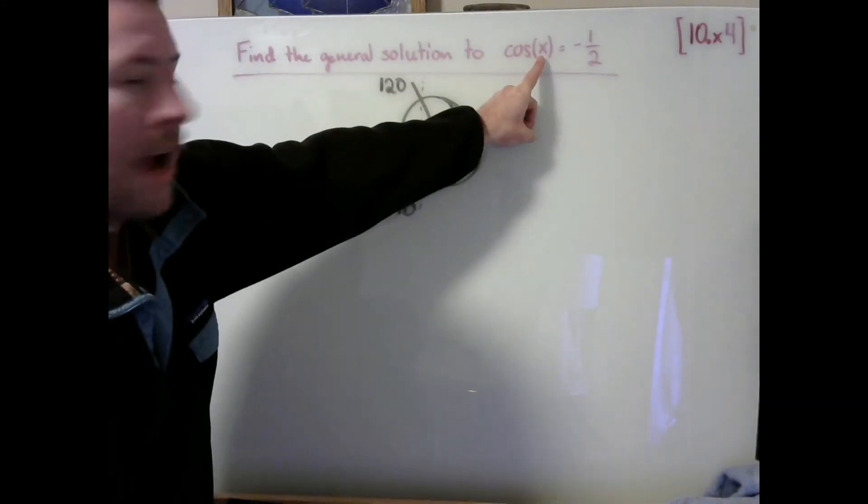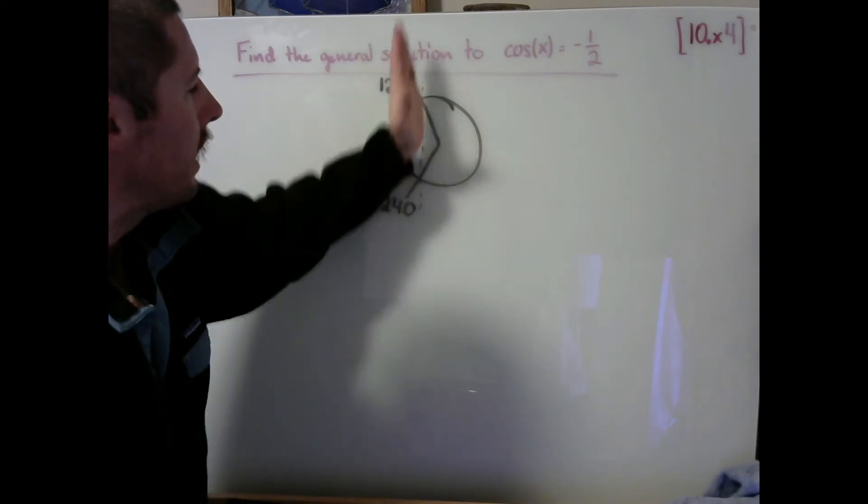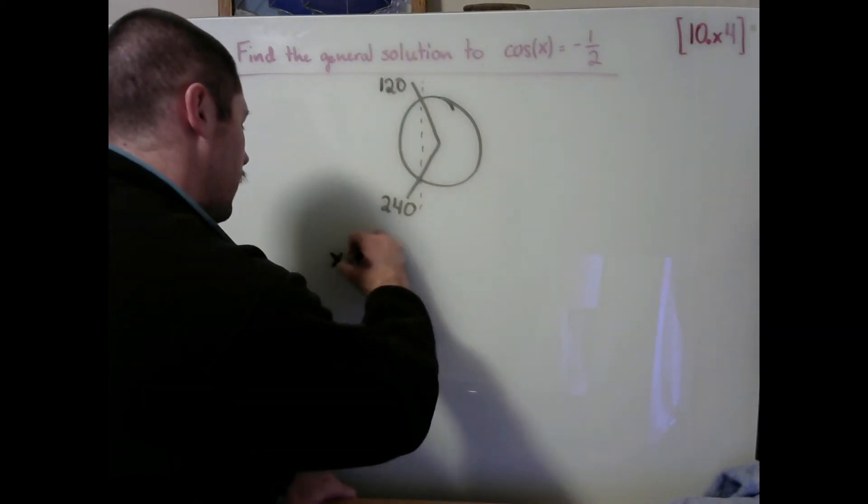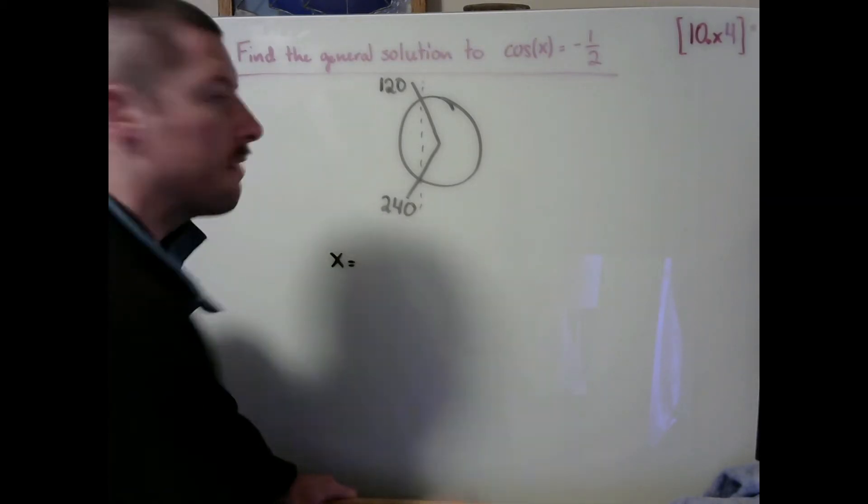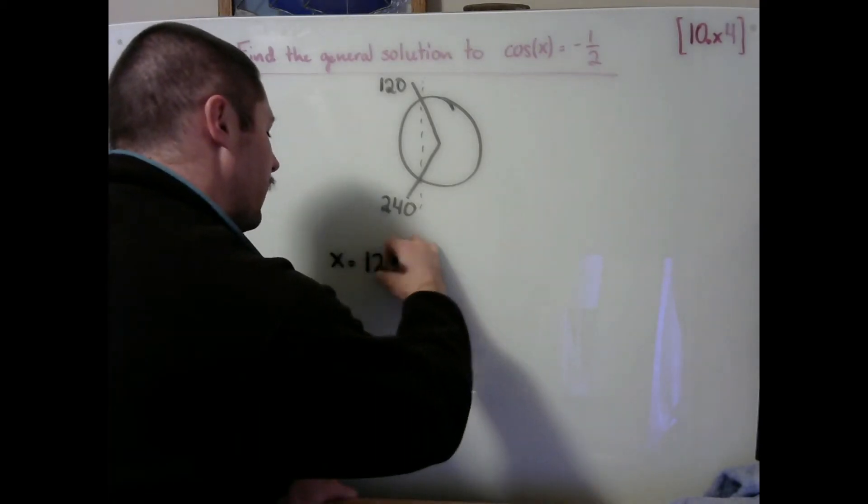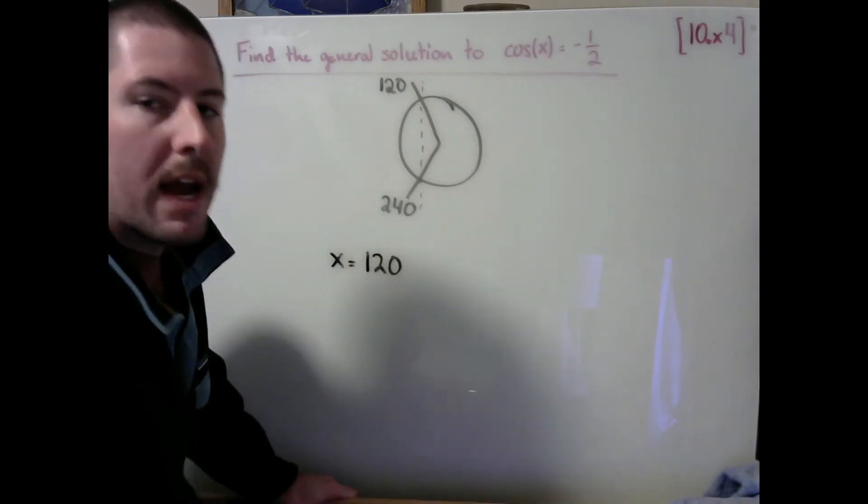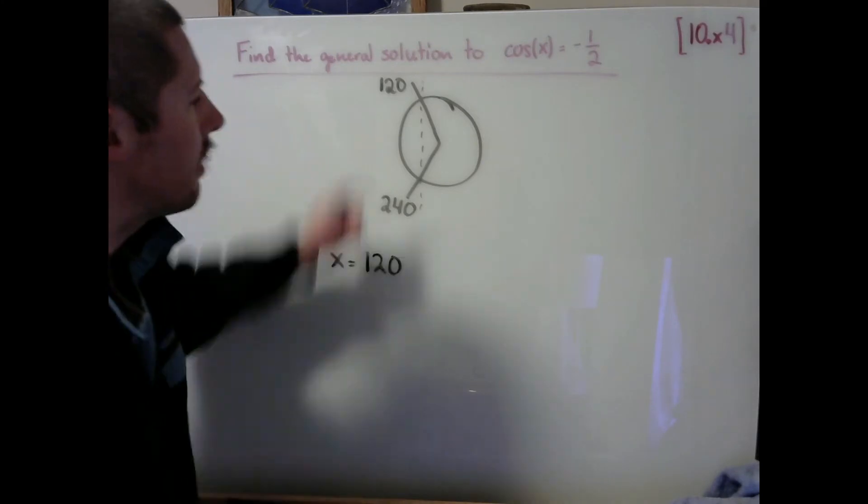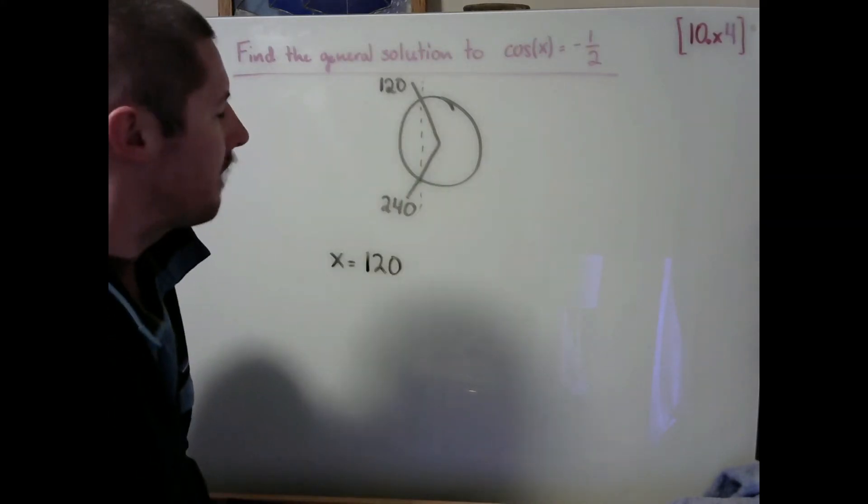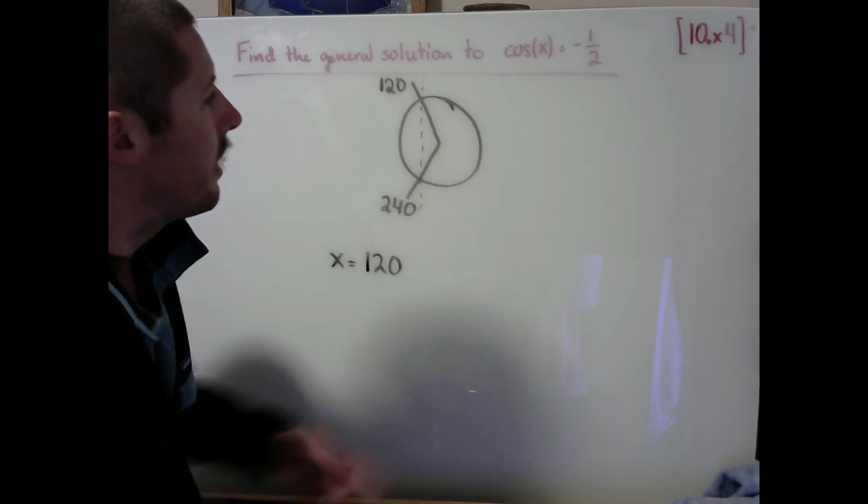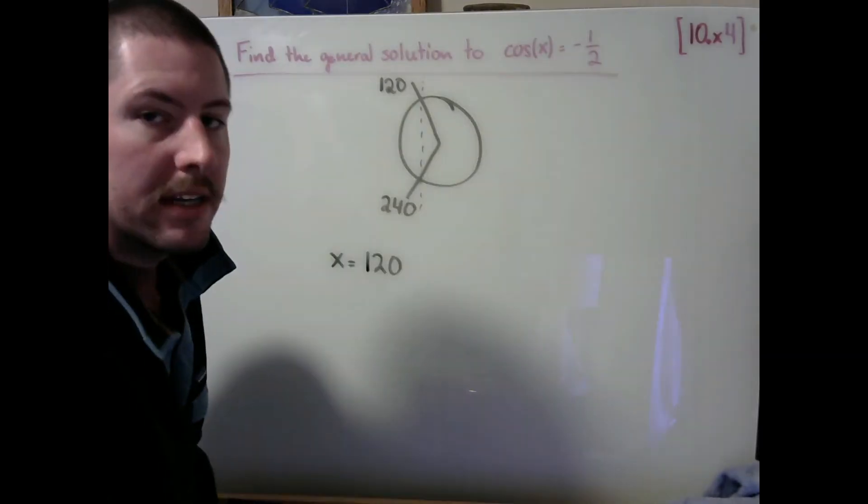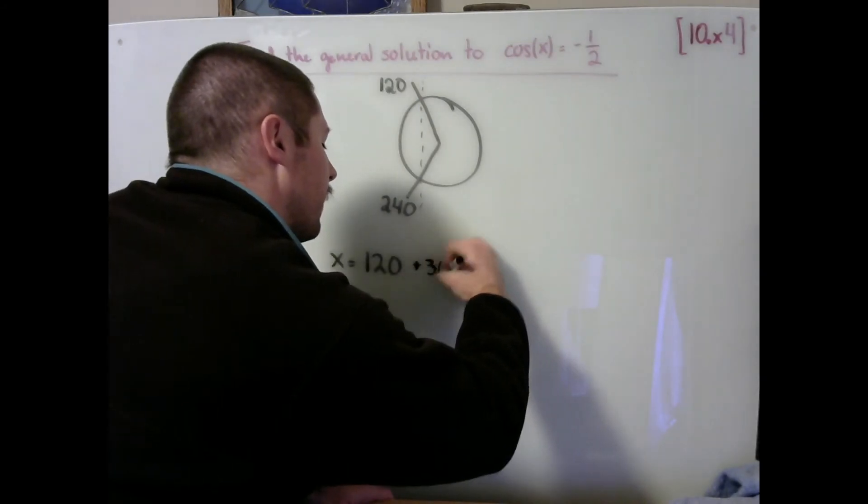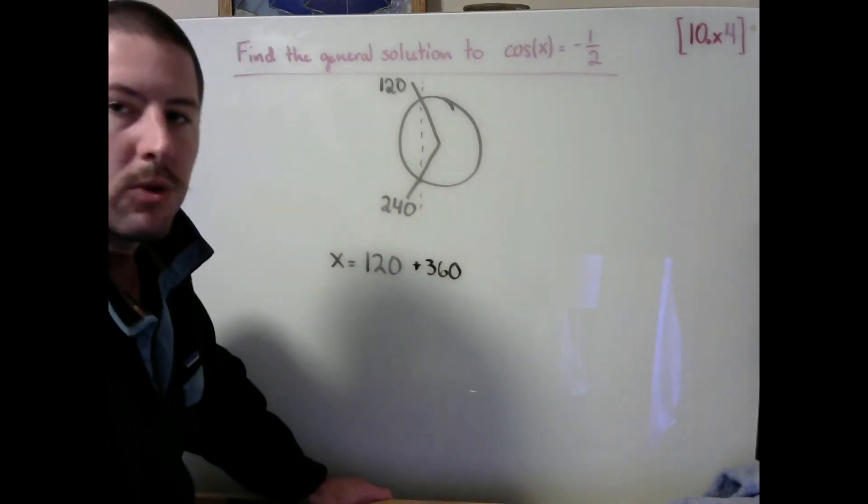So again, we're looking for angles that we have named X that are going to result in us landing at either of these two locations here. It seems to me that the first solution that I'd like to state for X is 120 degrees, but what I know is that I could do any number of additional laps around the circle as long as I still land at this angle. I'll have a cosine value of negative 1 half. What I know I can do here is, since cosine has a period of 360 degrees, I know that I can add an additional 360 any number of times to arrive at a new solution.